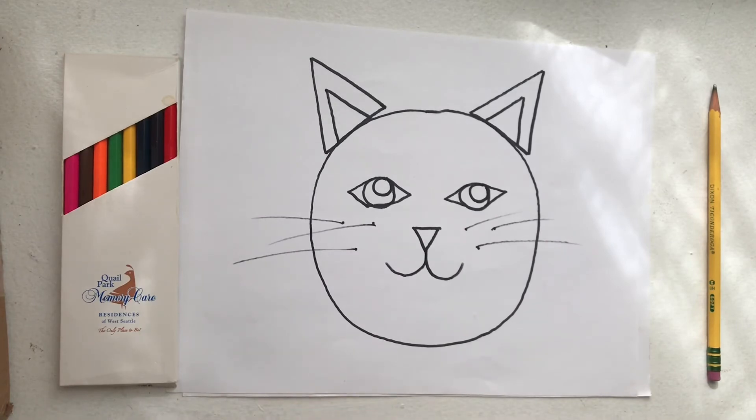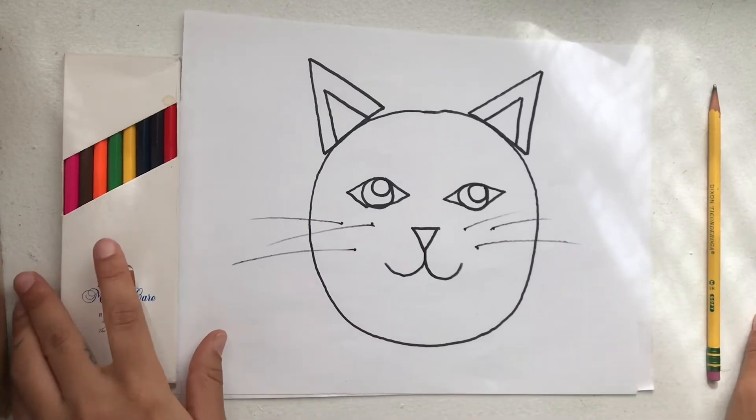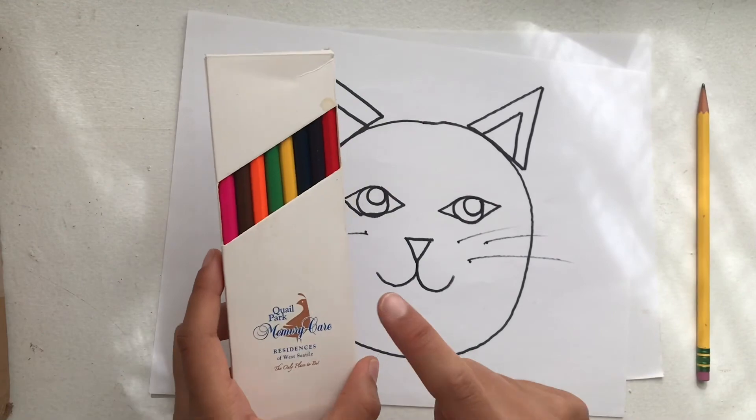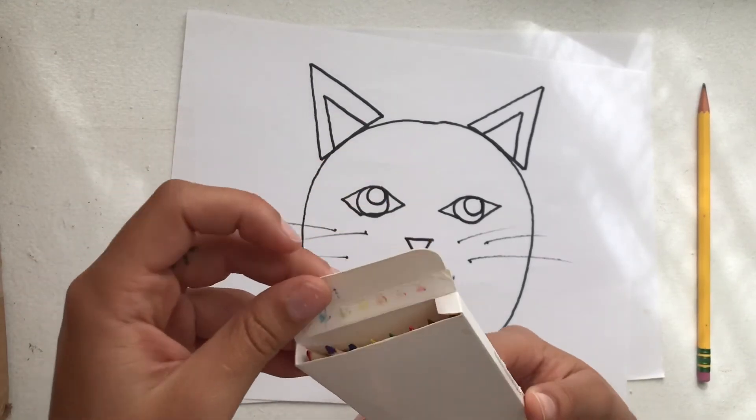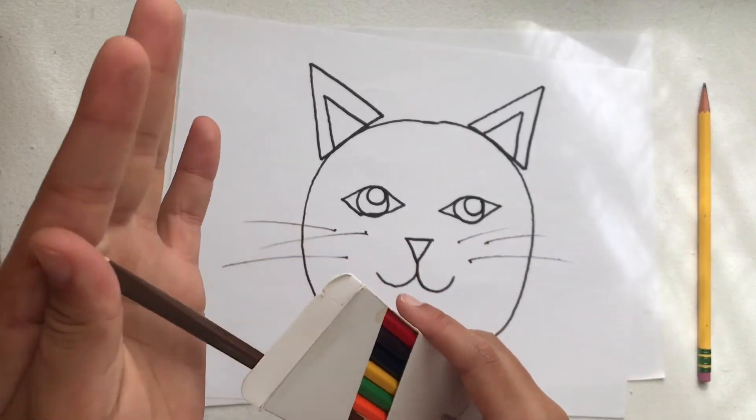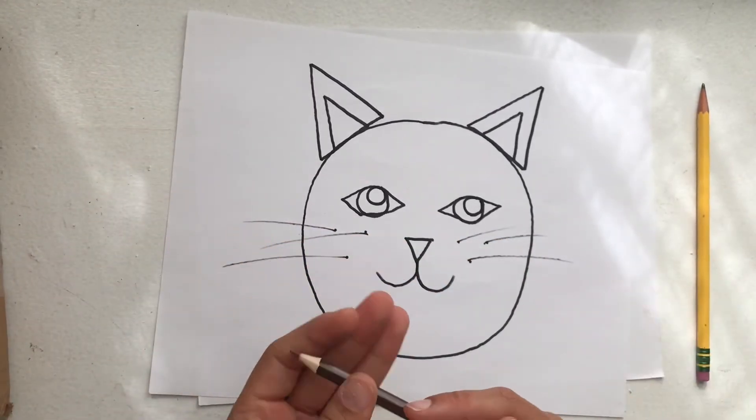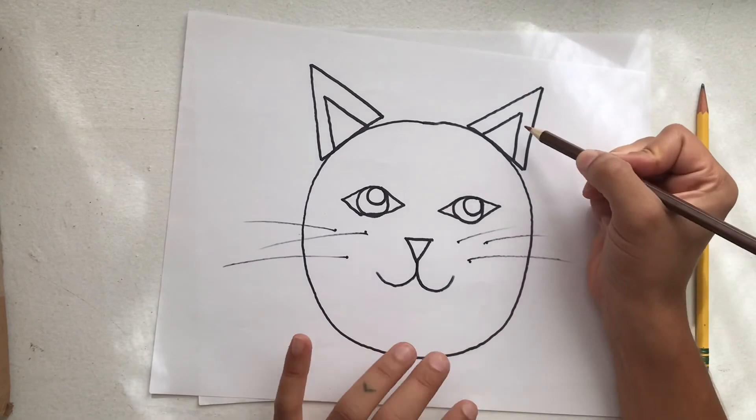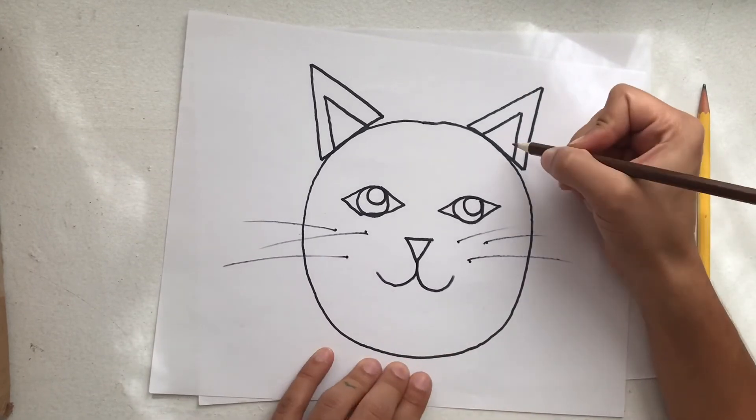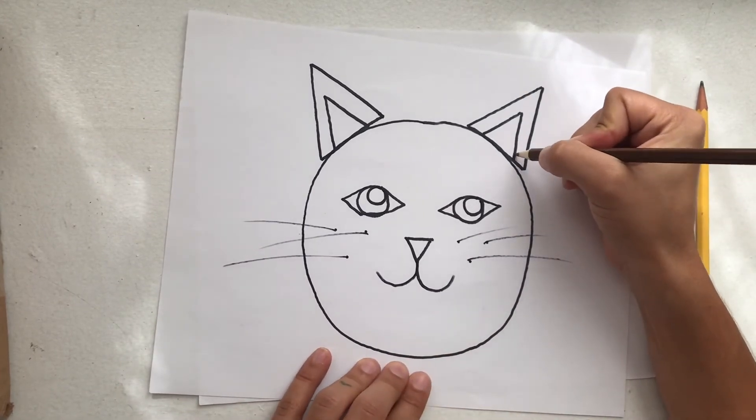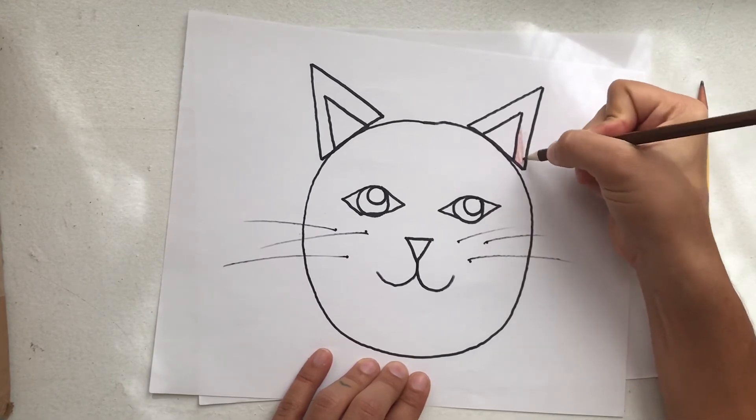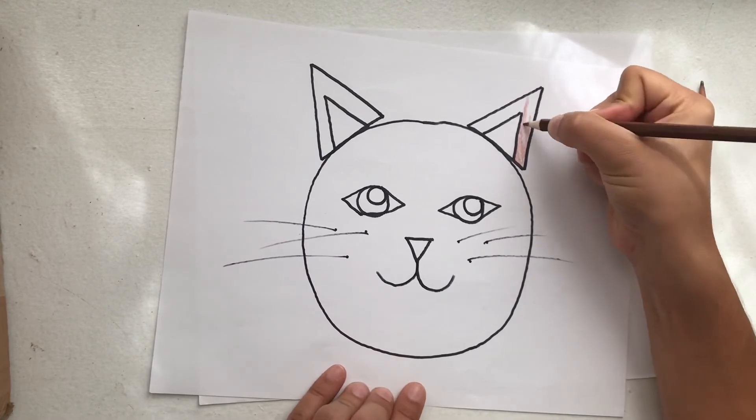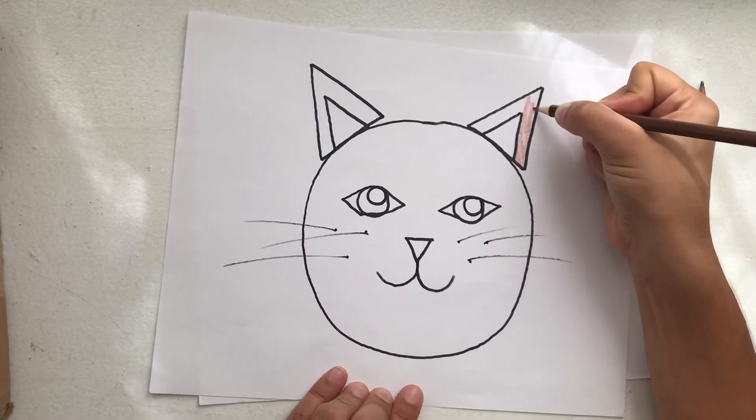So my kitty face is done. My next step would be to get my color and color in my kitty. Remember when you're coloring you want to do your best work and you don't want to scribble. So watch how I color in the ear. For my kitty I want to make his fur brown. Your kitty can be any color you want. Think about cats that you've seen before and what color they are.